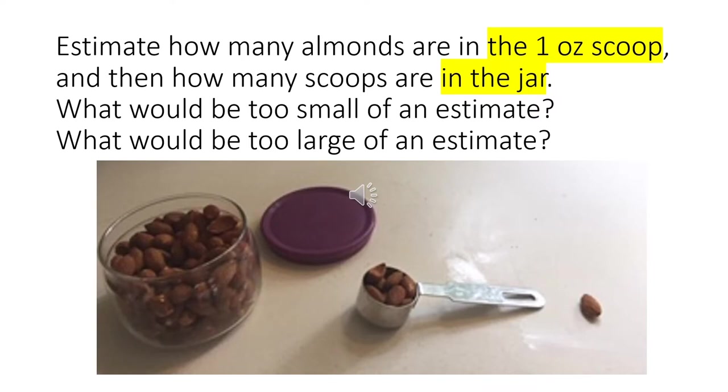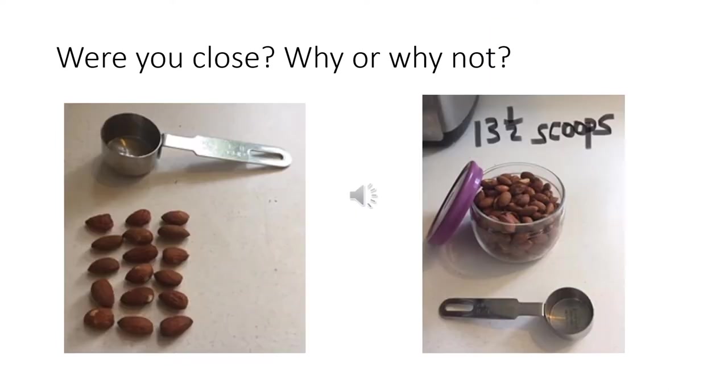How could we use estimation to give us a general idea of the answer for our problem? Look at the picture. Estimate how many almonds are in the one ounce scoop, and then how many scoops are in the jar. What would be too small of an estimate? What would be too large of an estimate? Think about it before I show you the next picture. Were you correct? Were you close? Why or why not?